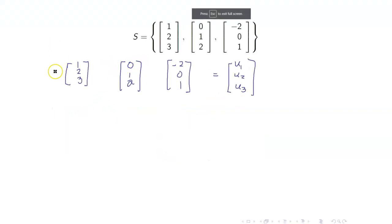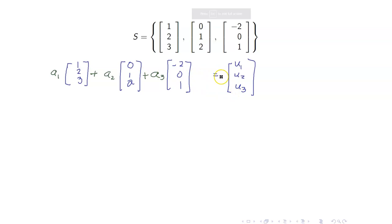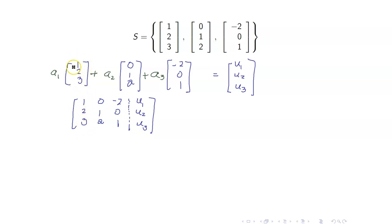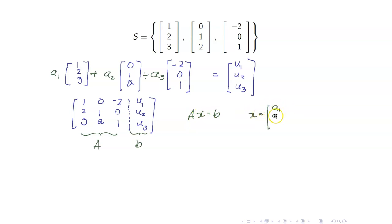What we want to do is to find coefficients A1, A2, and A3 so that this vector equation will be true. This vector equation will result in the following augmented matrix. Notice that the columns here are just the column vectors in our basis. If we let this be our A, our coefficient matrix, and this is our B, then this is simply AX equals B, where X is the column vector A1, A2, A3. You can verify here that A is invertible.